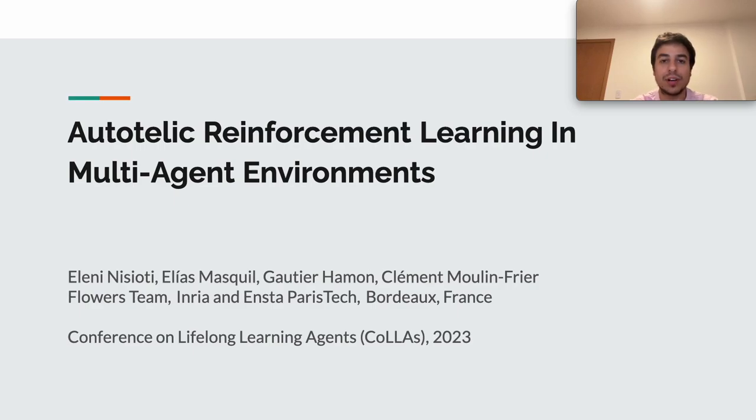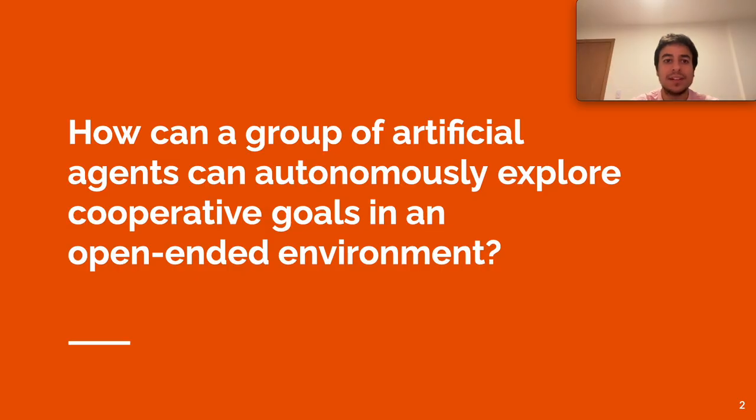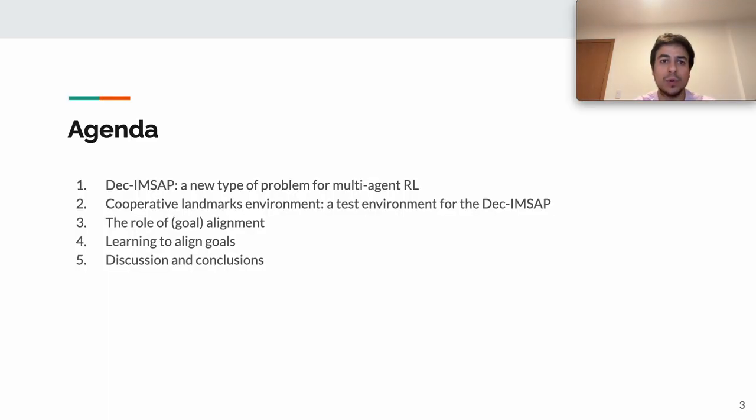I'm Elias Masquil and in this talk I will present our work on Autothelic Reinforcement Learning in Multi-Agent Environments done at the Flowers team. Let's start with the question we want to address: How can a group of artificial agents autonomously explore cooperative goals in an open-ended environment? I will begin with the formalization of the problem, then present the setup for our experiments, followed by discussion of our main results, the role of goal alignment, and an algorithm that allows agents to learn to align their goals in a fully decentralized fashion. Finally, we'll end with discussion and conclusions.